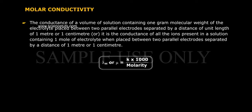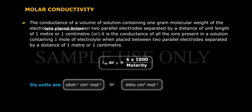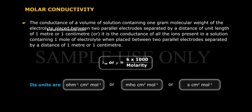Lambda M (or Mu) equals K into 1000 divided by molarity. Its units are ohm inverse centimeter square mole inverse, or mho centimeter square mole inverse, or S centimeter square mole inverse.